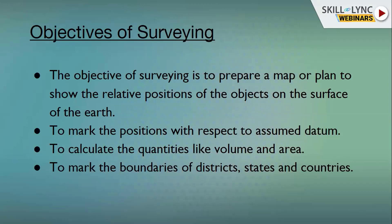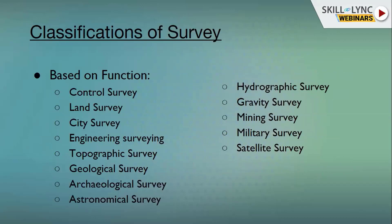Surveying is classified into different classifications. Based on functions, we have many surveys. Control survey means we are going to fix the reference points in a widely spaced city or area. This is being done by the Survey of India. Survey of India fixes reference points, and using those reference points, local people calculate their positions. The railway station MSL reference is also done by Survey of India, which has been there for about 250 years since the British period and has its head office in Hyderabad.